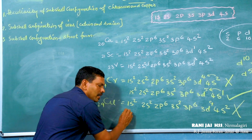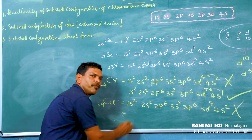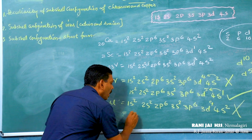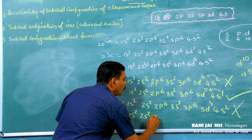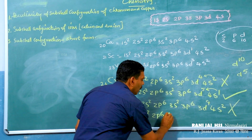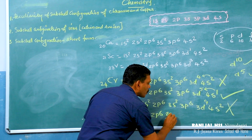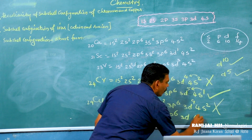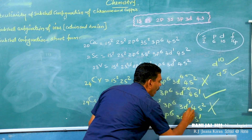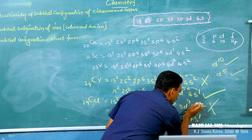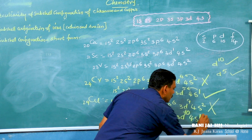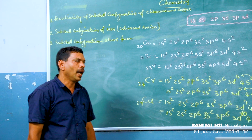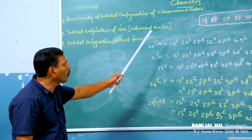The correct electronic configuration of copper is: 1s2, 2s2, 2p6, 3s2, 3p6, 3d10, 4s1. This is the correct electronic configuration of copper. And this is the peculiarity — the speciality of the subshell electronic configuration of copper and chromium.